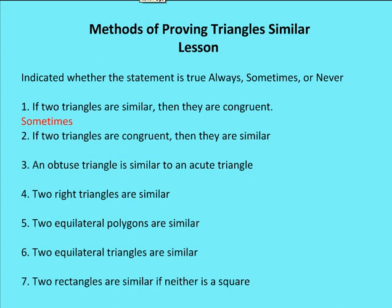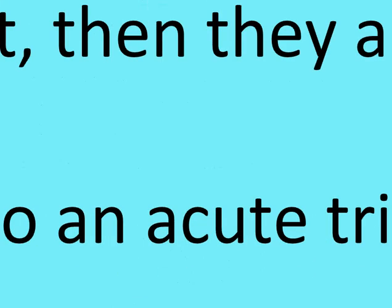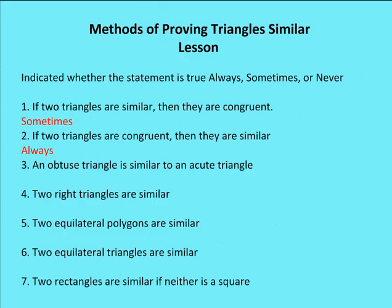Question two: if two triangles are congruent, then they are similar. That's going to be always. If two triangles are congruent, the ratio of the side lengths is 1 to 1 and all angles are congruent, so it's always the case that congruent triangles are also similar.